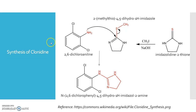The role of 2,6-dichloroaniline is that the amino function acts as a good nucleophile, which will attack on the electron-deficient carbon present in 2-methylthio-imidazoline to give the desired compound, clonidine. Clonidine is obtained by reaction of 2,6-dichloroaniline with 2-methylthio-imidazoline in one step. Thank you.